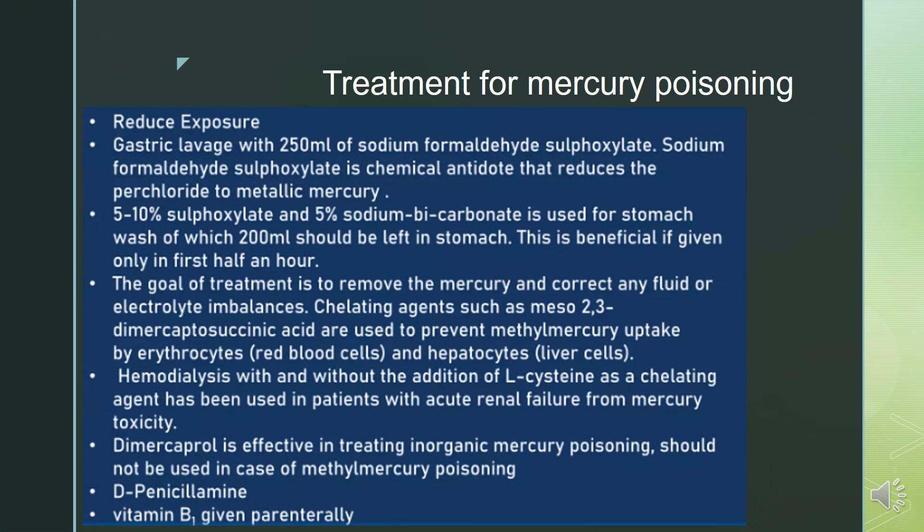Treatment for mercury poisoning includes reduced exposure, gastric lavage with 250 ml of sodium formaldehyde sulfoxylate 5–10%, and 5% sodium bicarbonate is used for stomach wash, of which 200 ml should be left in the stomach. The goal is to remove mercury and correct any fluid or electrolyte imbalances. Hemodialysis with or without the addition of a chelating agent can be used.